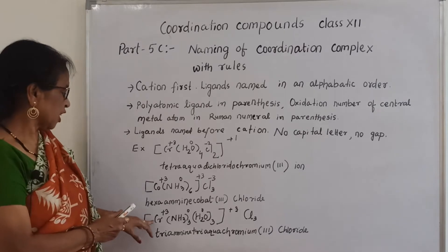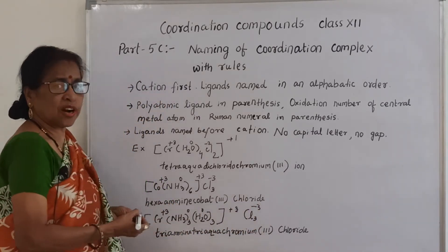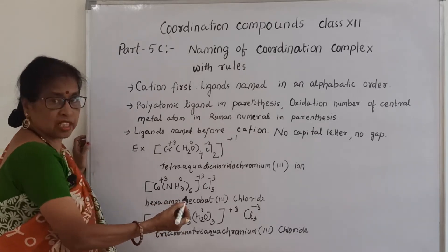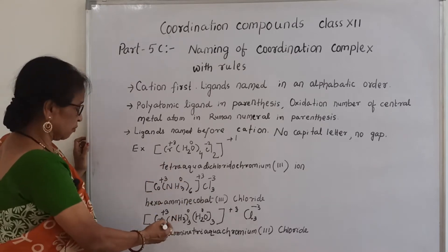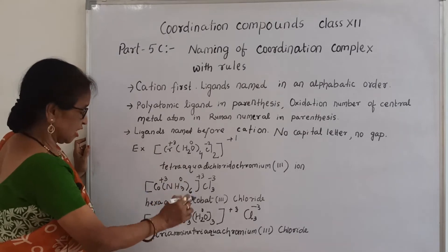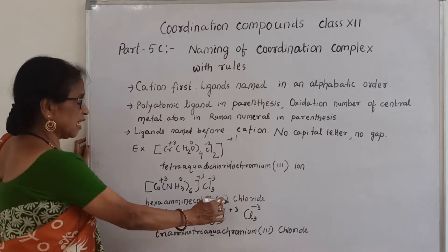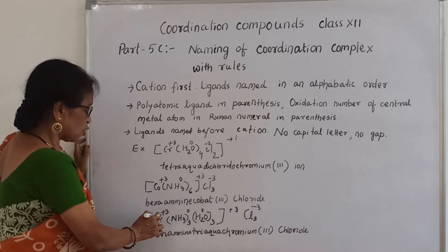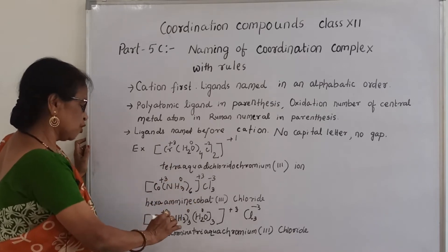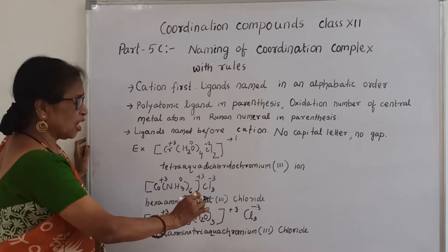The third example has a cationic complex part and an anionic counter ion (chloride). The complex contains 3 NH₃ (triammine) and 3 H₂O (triaqua) — both neutral, coordination number = 6. The complex ion charge is +3, so chromium is +3. The name is written with no capital letters and no gaps inside the complex: triamminetriaquachromium(III), followed by a gap, then chloride as the counter ion.